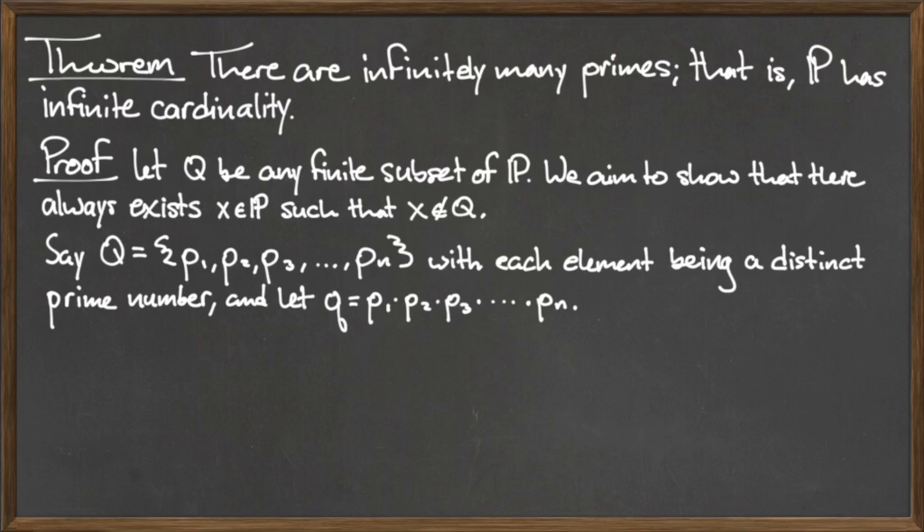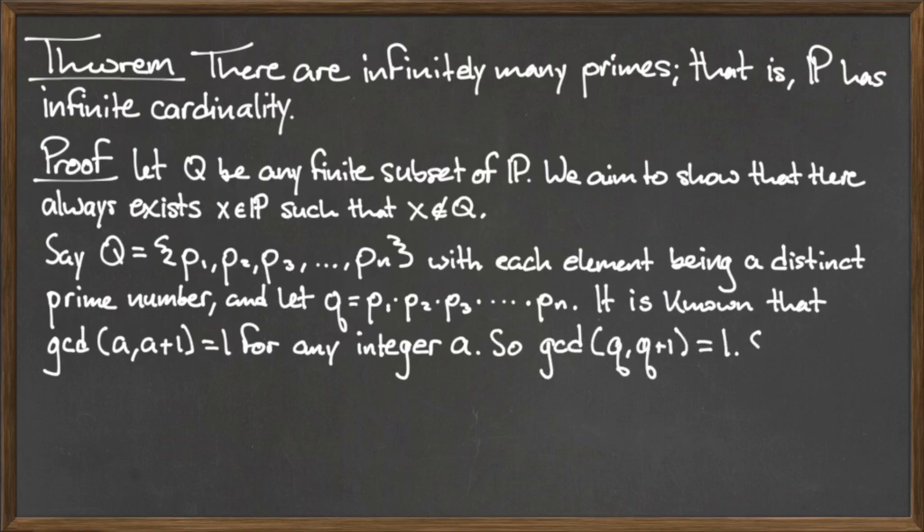Define the number little q to be the product of all of the Ps in the set capital Q. By the properties of the GCD, we know that the GCD of a and a+1 is equal to 1 for any integer a. So, the GCD of q and q+1 must be 1.